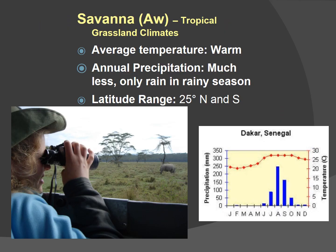The Savanna — definitely warm. Annual precipitation is much less, only in rainy seasons. In Kenya, one rainy season basically lasts all summer long. Looking at the climograph, the temperature does change and gets really hot during the rainy season. Their winter is around January through April — still hot, maybe around 70 degrees, not 30 degrees. Annual precipitation is less overall — just one big season of rain.